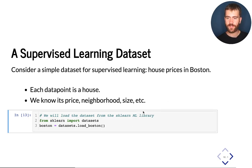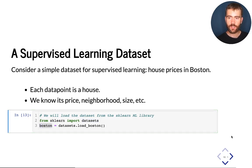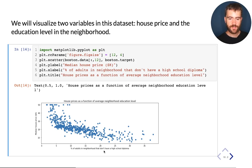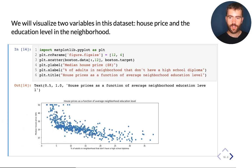I'm going to load this dataset using scikit-learn, which is a popular library for machine learning. In Python, I can load its dataset module and load this dataset into these slides. Using another library called matplotlib, I can visualize this dataset in two dimensions — specifically, the price as a function of neighborhood education level. On the x-axis, I have the percentage of adults in the neighborhood that don't have a high school diploma. You can see that if 35% of adults lack a high school diploma, the price tends to be lower than in higher-educated neighborhoods, and you can see this downward trend in the data just by inspecting it.